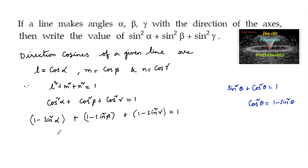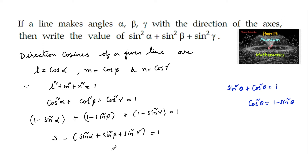Substituting, the left-hand side equals 1 plus 1 plus 1, that is 3, minus sin squared alpha plus sin squared beta plus sin squared gamma, which equals 1. Therefore, 3 minus (sin squared alpha plus sin squared beta plus sin squared gamma) equals 1, giving us 3 minus 1 equals 2.